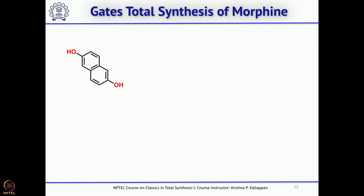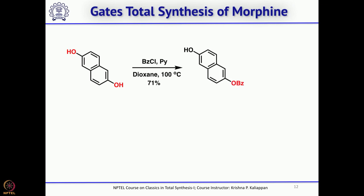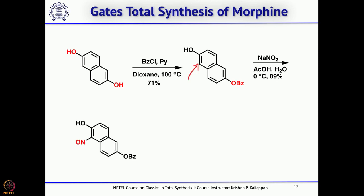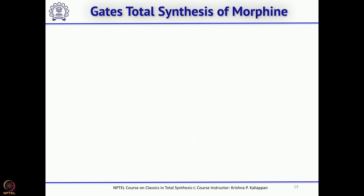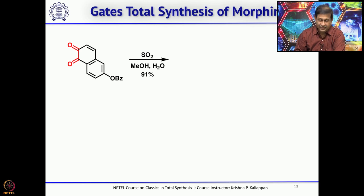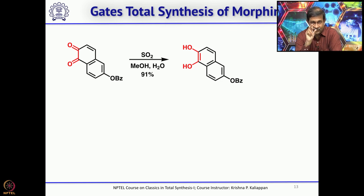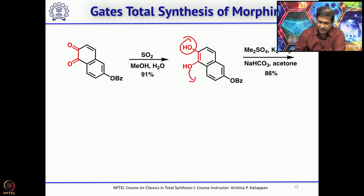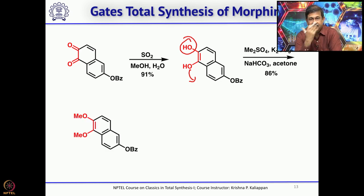Gates took this dihydroxy compound — a symmetrical compound — and selectively protected one of the phenolic hydroxyl groups as a benzoate, then introduced a NO group by treatment with sodium nitrite and acetic acid. The NO group was reduced to get the corresponding NH₂. Oxidation with ferric chloride gave the orthoquinone, which was then reduced to get the corresponding dihydroxy compound. Once the dihydroxy compound was obtained, both groups were methylated using potassium carbonate and dimethyl sulfate.